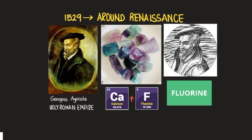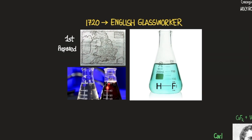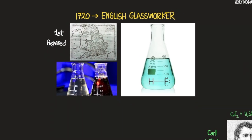Fluorine always fuses to other elements and forms compounds. The first person to describe a fluorine-containing compound was Georgius Agricola in the Holy Roman Empire during the Renaissance. He identified the properties of the rock containing fluorine, which would eventually be isolated by others after him. The next person to interact with fluorine was an English glassworker in 1720, who was the first to prepare a crude sample of hydrofluoric acid.